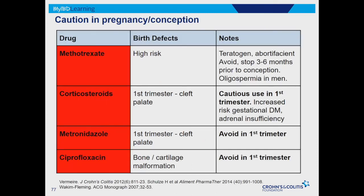The vast majority of drugs we use are safe in pregnancy, conception, and breastfeeding, but I've highlighted a few in red — red means stop. We want to make sure none of these medications are used in the first trimester, and in the case of methotrexate, stop three to six months before conception. Methotrexate in pill or injectable form is very high risk for birth defects and is used for termination of pregnancy. For young females trying to conceive, methotrexate is a no-no. Patients on methotrexate are advised to use birth control if not planning children imminently.